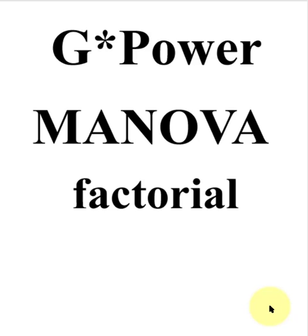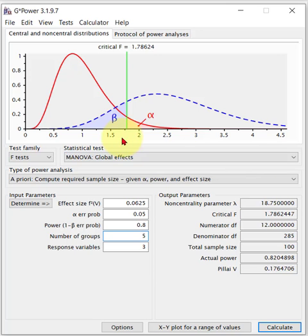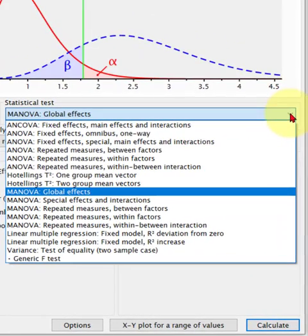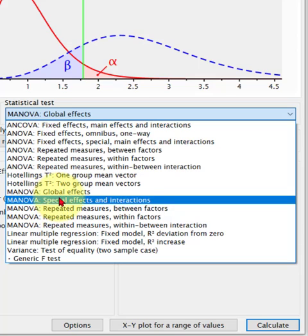We're going to use G-Power to estimate the minimum sample size needed to run a factorial MANOVA. A MANOVA is in the F-test and global effects - that's just a regular ANOVA, not what we want. We want a factorial, which means special effects and interactions. A factorial means when you have more than one categorical variable, and we're looking for the interactions - that's your trigger word here.